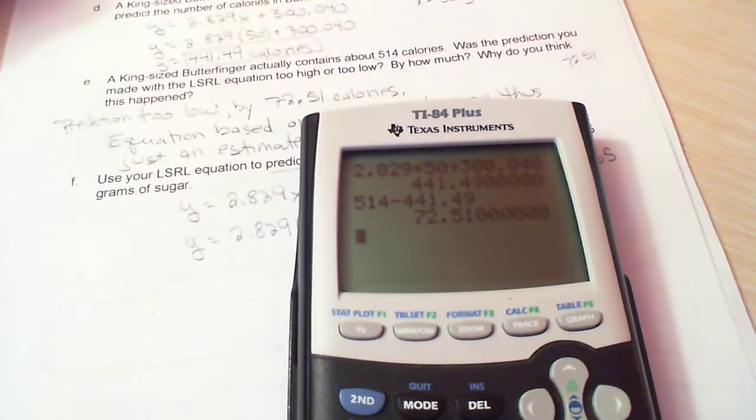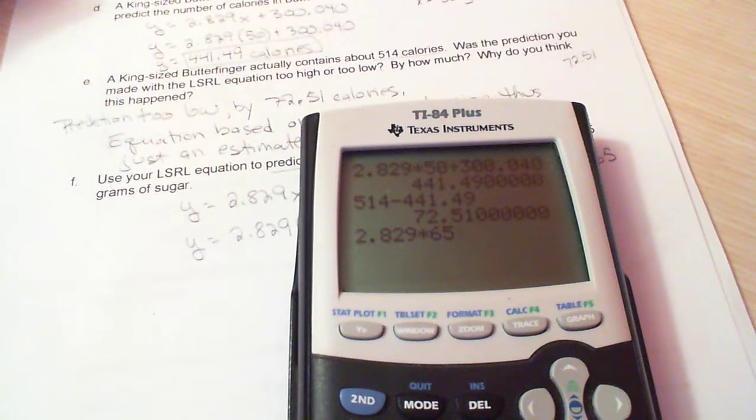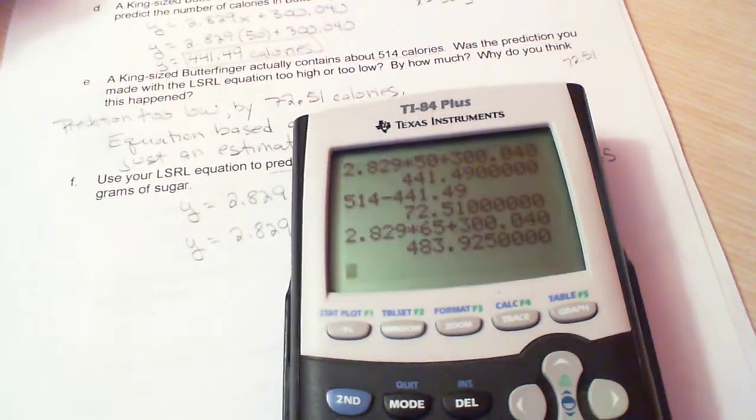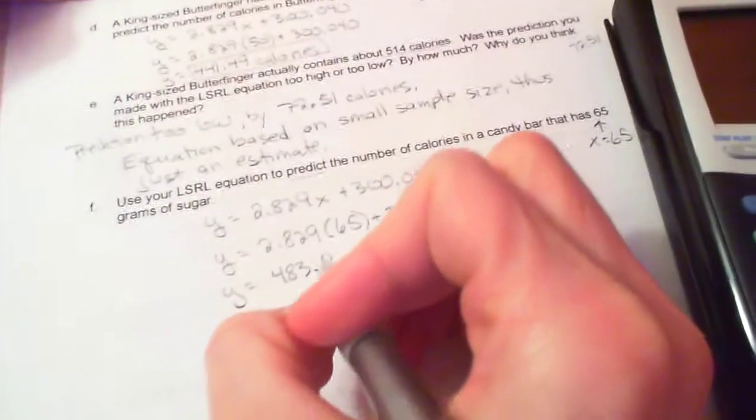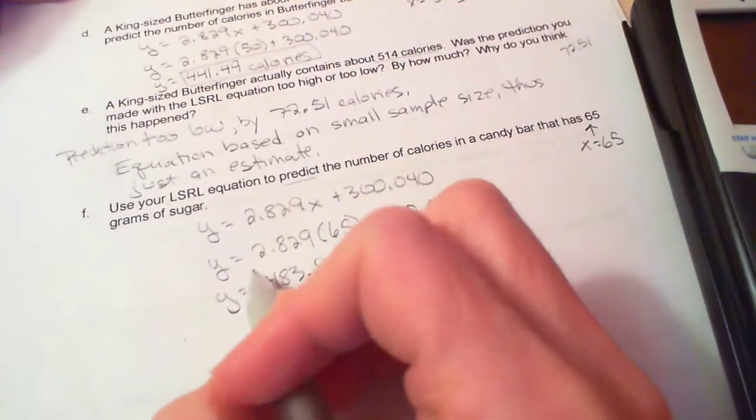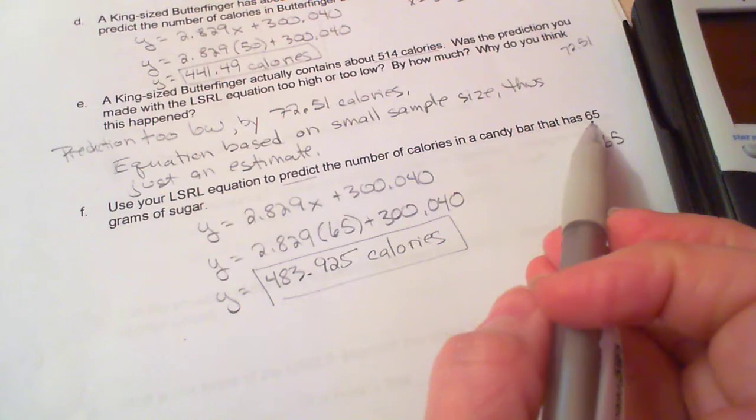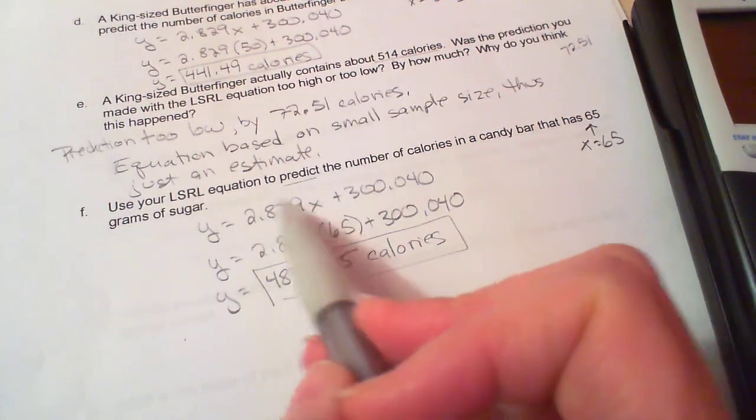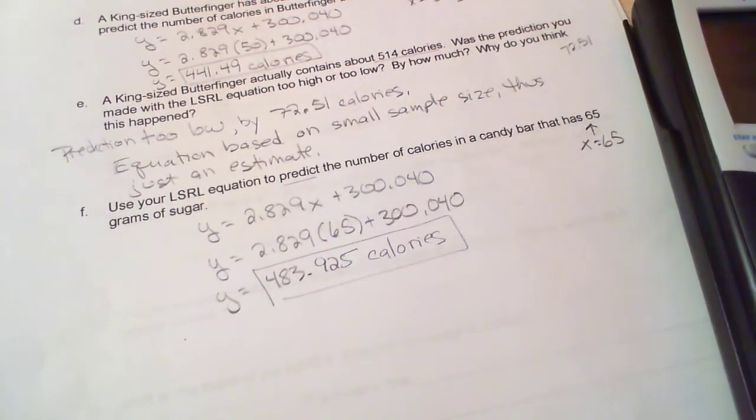Let's put that in the calculator. So I have 2.829, that's our slope, times 65 grams of sugar plus 300.040, and I get 483.925. So 483.925 calories. Make sure you have units on all of your answers, and pretty much all the problems in this whole unit. So if a candy bar has 65 grams of sugar, if x is 65, then my equation predicts that y, which is calories, will be 483.95.